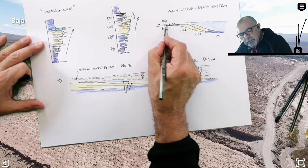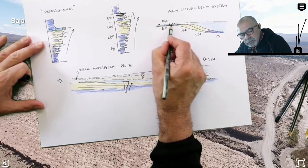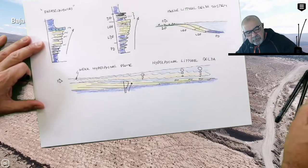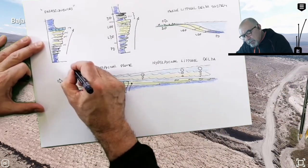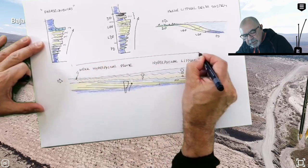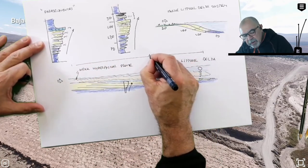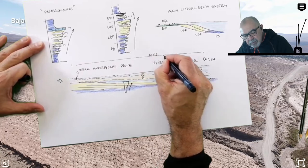But the main difference of this hyperpycnal littoral delta with the marine littoral delta system is this hyperpycnal littoral delta lacks the delta plane. The delta plane is common in this system because this kind of deltas are really attached to the coast, a very coastal feature.